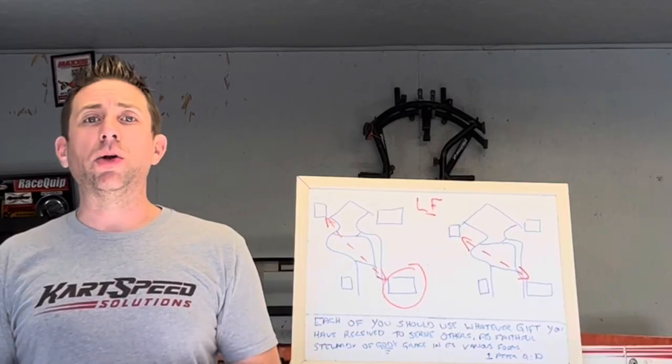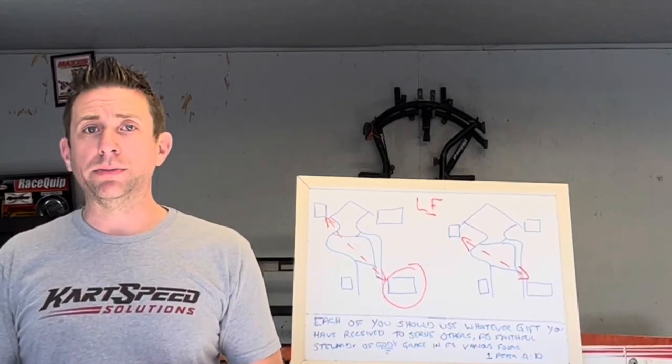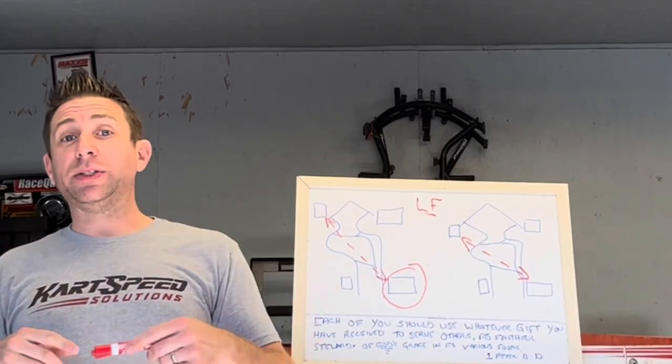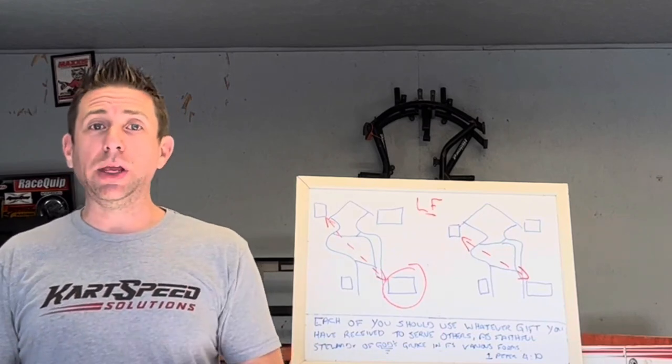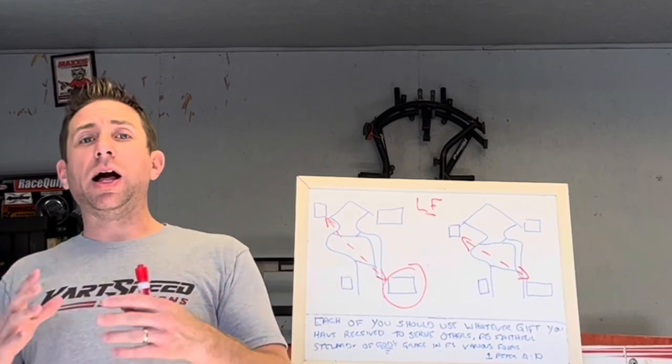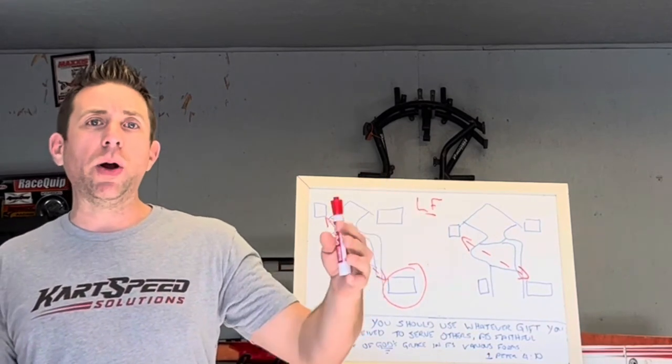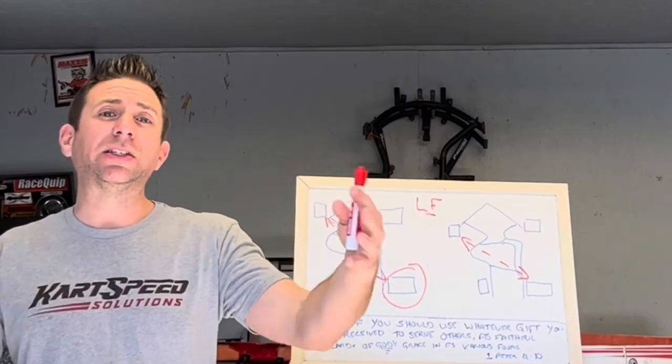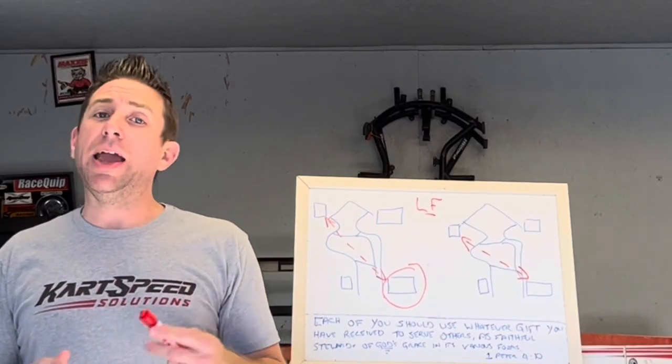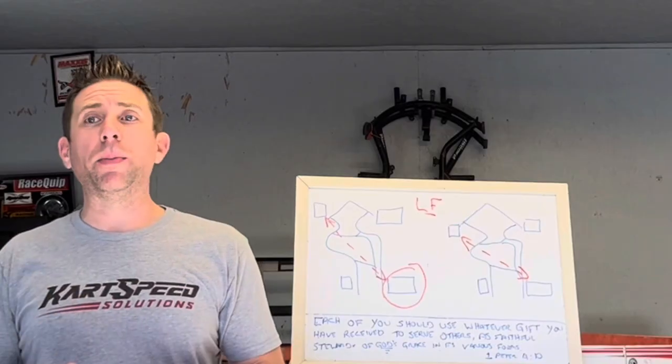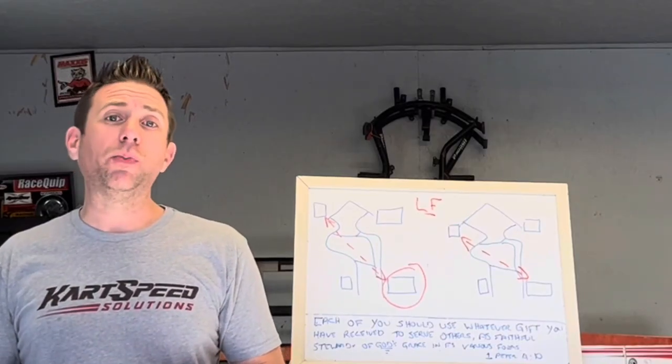On the flip side of that, if you go down to Triple T or Possum Kingdom, a track that has long straightaways, or like Triple T is a momentum-based race track, if you run the left front forward and the right front back, you are going to kill your speed because the go-kart's not going to want to roll as well. I knew you would agree, Cody.